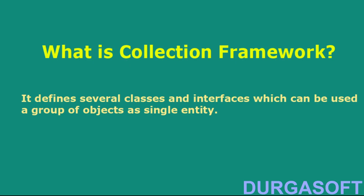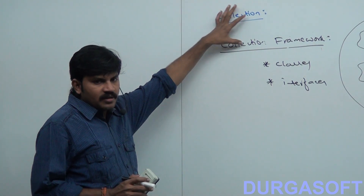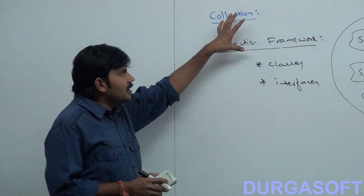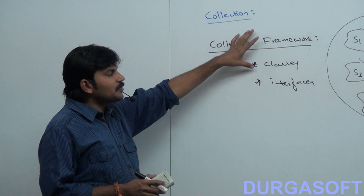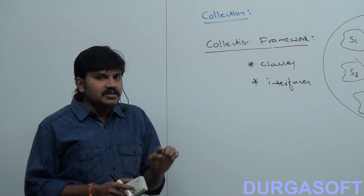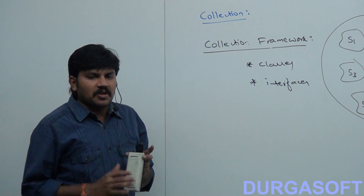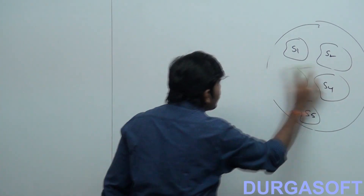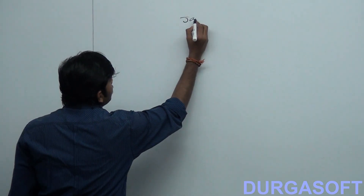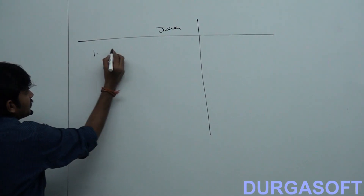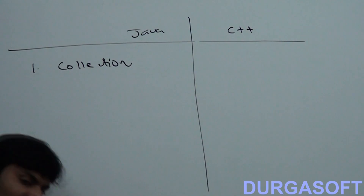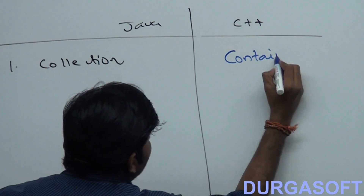So what is collection and collection framework? Collection is a group of individual objects as a single entity. In order to represent a collection, several classes and interfaces are required — these are defined inside the collection framework. This collection and collection framework terminology is related to Java. But the concept is not new; it already exists in older languages. In Java we use the word 'collection', but in C++ the equivalent terminology is 'container'.